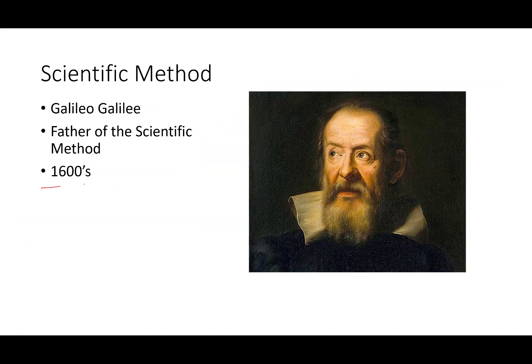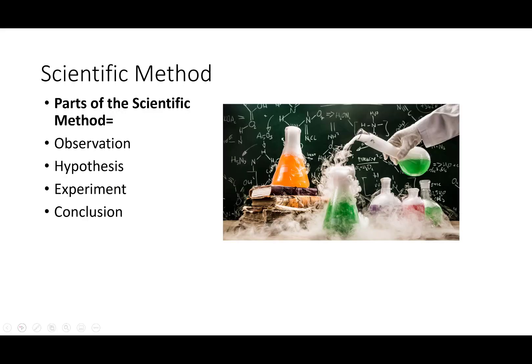In the 1600s, Galileo Galilei — an Italian gentleman with the influence of a lot of other great people — created and began the scientific method. The scientific method has some very distinctive parts. Depending upon the book you read there might be a slightly different list, but the primary parts are: there's always an observation, a hypothesis, an experiment, and a conclusion.